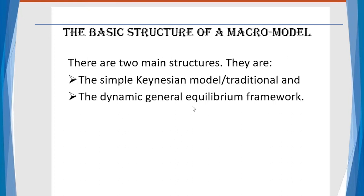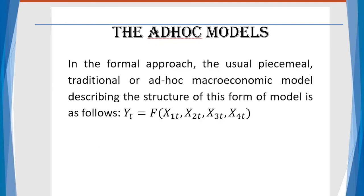In general, there are two main structures: the single-equation or traditional model, and the dynamic general equilibrium framework. The first is what is called ad hoc models. In the formal approach, the usual piecemeal, traditional or ad hoc macroeconomic models describe the structure as follows: you determine the phenomenon you want to study, name your dependent variable, and for independent variables, you look for theoretical backings and select variables that can explain the phenomenon.